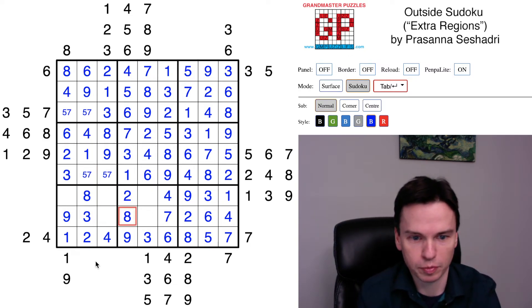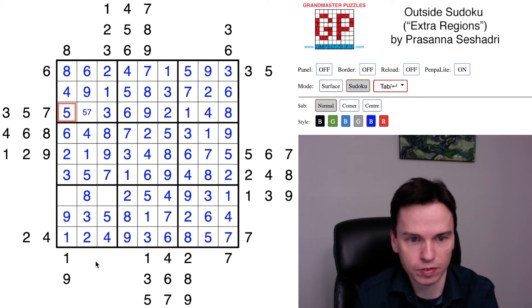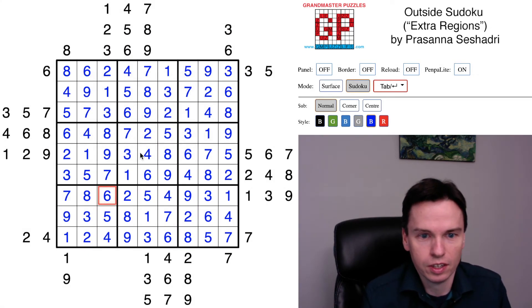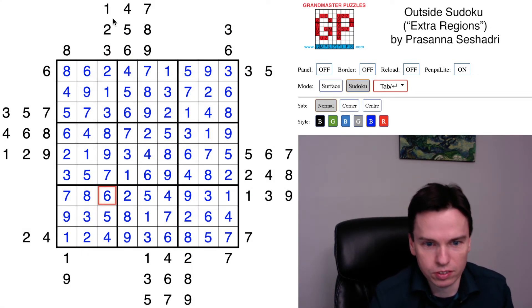We still need to get a 3 in this bottom box, got 3 in the third column in the 7th row, so this is 3, this is 3. 5, 7 to go, this is 1 and 5, and that 5 puts in this 5 which gives a quick 5, 7, 5, 7, 7 and last digit 6.